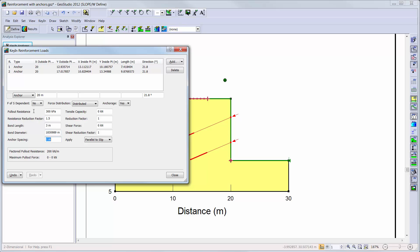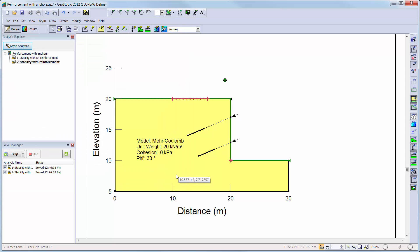If only one anchor requires editing, then only the anchor of interest should be highlighted in this window. Once all of the known input parameters are defined for the anchors, we can go back to the first analysis window and solve both of the analyses.